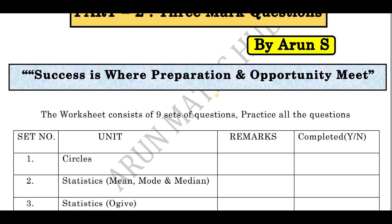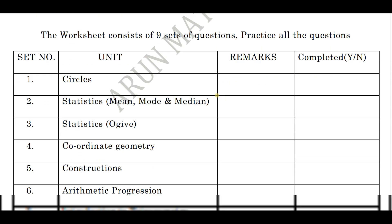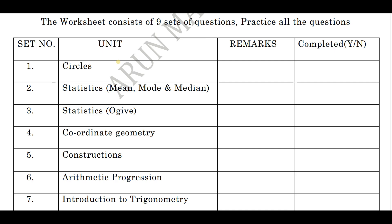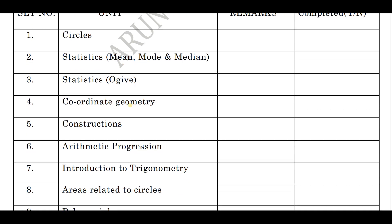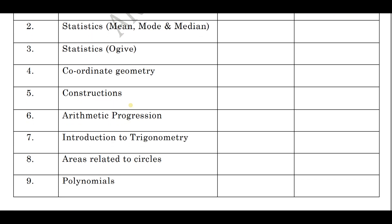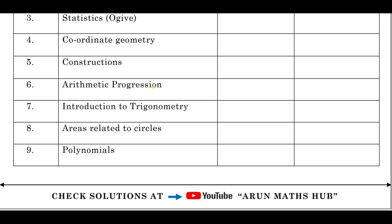There will be total nine questions for three marks. You can expect one question from the unit circles — the theorem: the tangent drawn from external point to a circle are equal. From statistics, either mean, mode and median you can expect one question, or there will be an option. Statistics will also have OG — less than OG or more than OG. From coordinate geometry you can expect one question: either finding the area of triangle, finding the value of k when the points are collinear, or finding the point when the ratio is given using the section formula. Construction of similar triangles — one definite question.